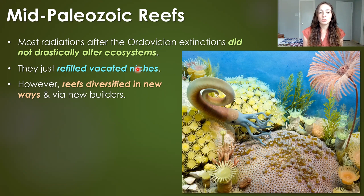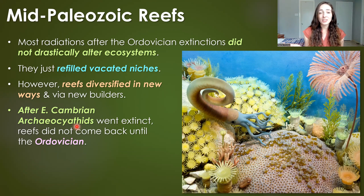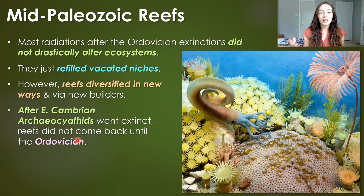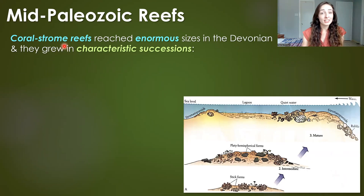Reefs are one exception — they diversified in many new ways by way of new reef builders, not even the same builders as in the Cambrian and Ordovician. The early Cambrian reefs were built by organisms called archaeocyathids, which went extinct in the middle Cambrian. Reefs didn't really recover until the Ordovician, but they still weren't at their peak until the Middle Paleozoic, where we had corals and stromatoporoids building much larger reefs. Coral-stromatoporoid reefs were large and successful in the Silurian but reached enormous sizes in the Devonian.